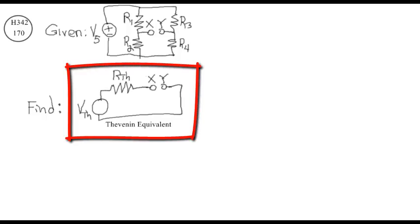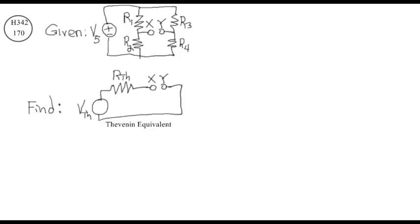This is the Thevenin equivalent circuit. It contains the original points X and Y, a Thevenin resistor, and a Thevenin voltage source. Notice that the Thevenin resistor and the Thevenin voltage source are in series. Notice also that the Thevenin voltage source does not include the polarity yet — that polarity is important, but we have to wait until we can determine it.